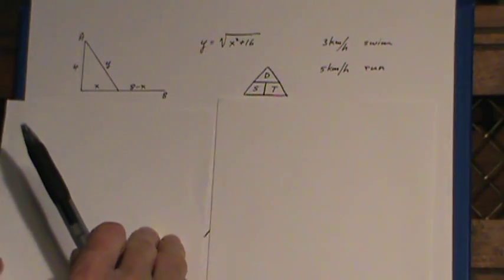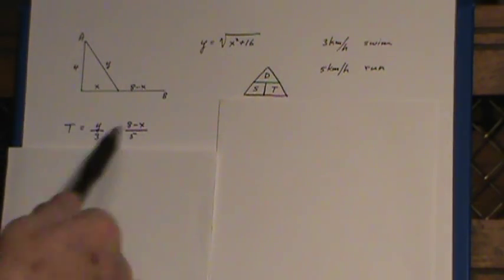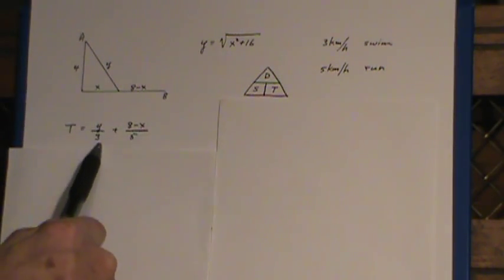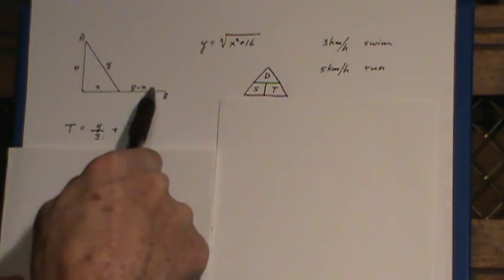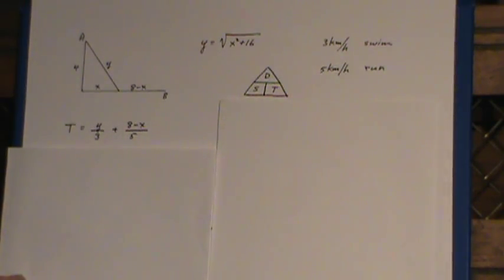So the time required for this trip, it looks very simple. It's just Y divided by the speed, plus 8 minus X divided by the speed. And once again, replace the Y.